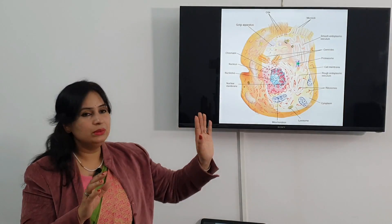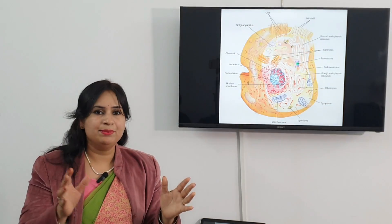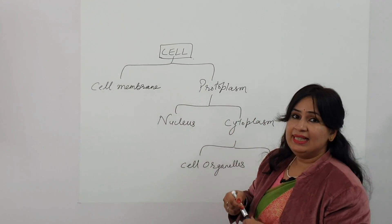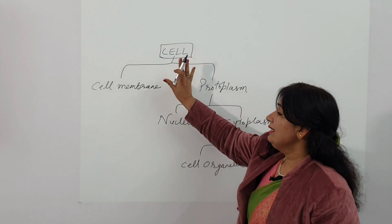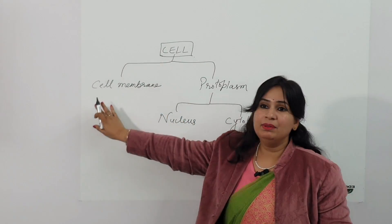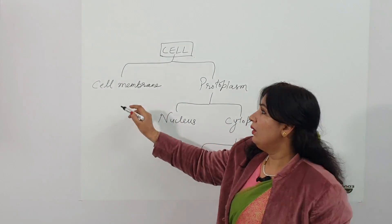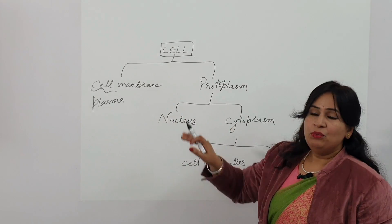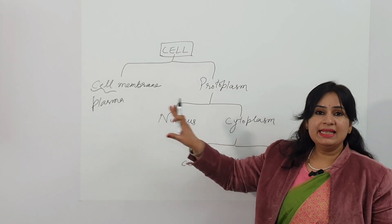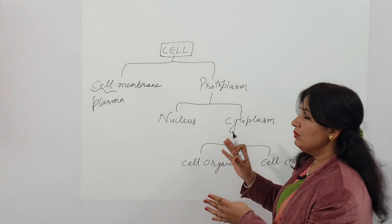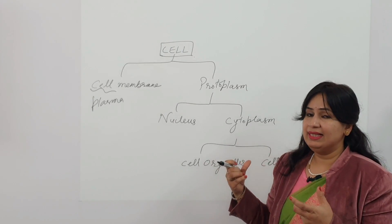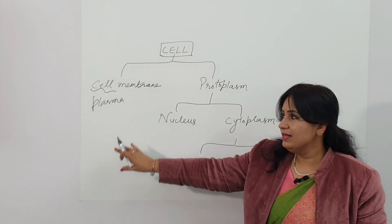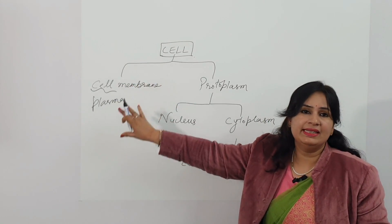Now I want to give you a brief description of the cell. With the help of a flowchart, let's see how the cell is divided. Cell is divided into two parts. Number one is the outer one — this is cell membrane, or we can say plasma membrane. This cell membrane is a selectively permeable membrane, as it allows the entry of certain materials to come inside the cell and stops other substances which are not useful for the cell. This is the covering, or the boundary of the cell.